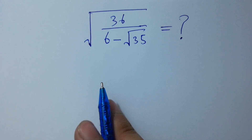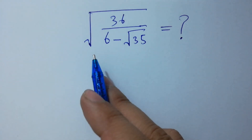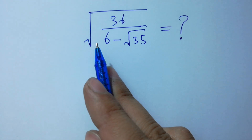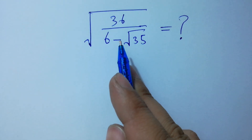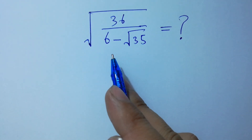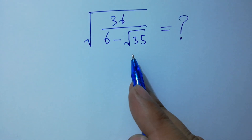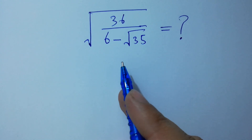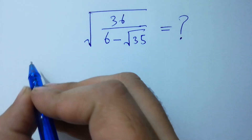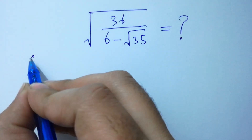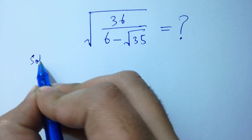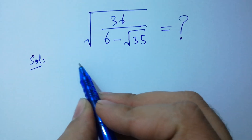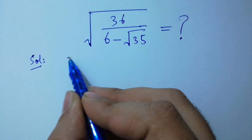Hello friends! What is the square root of 36 over (6 minus square root of 35)? How to simplify this? Let's have a solution — we rationalize it.